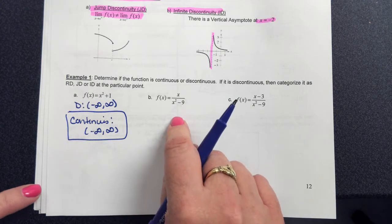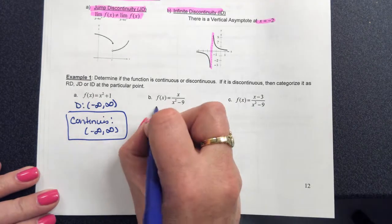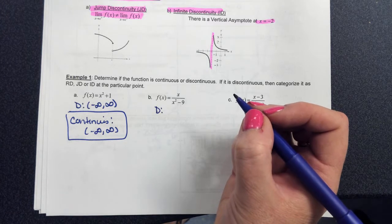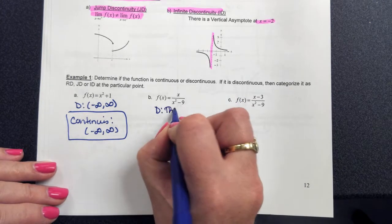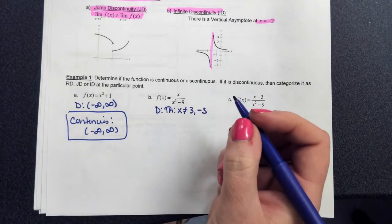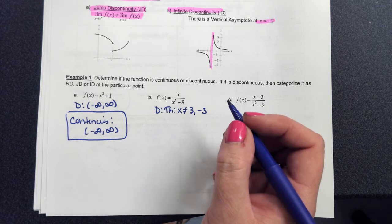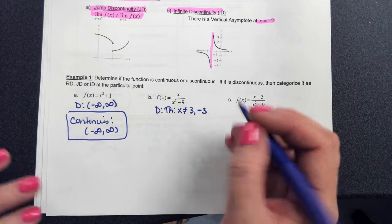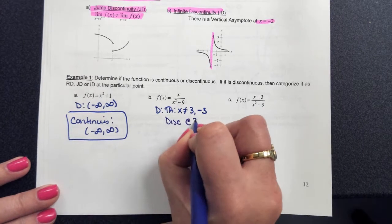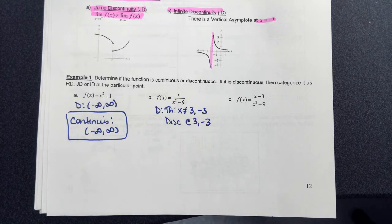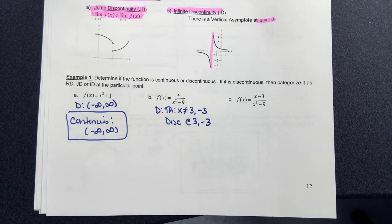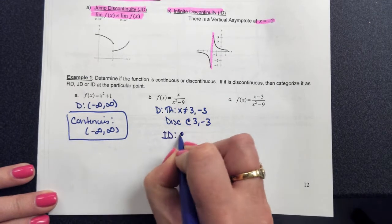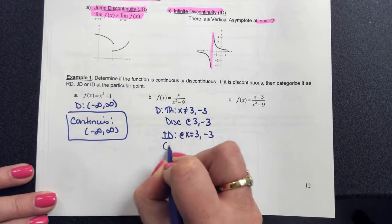For part B, it's a rational function. The domain is all real numbers except x = 3 and x = -3. So it's going to be discontinuous at 3 and -3. Graphically, what's happening at those values is a vertical asymptote, so the type of discontinuity occurring at x = 3 and x = -3 is infinite discontinuity — which is non-removable.